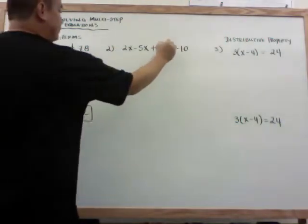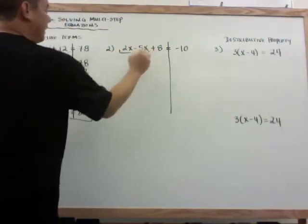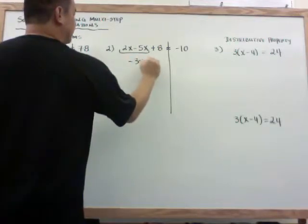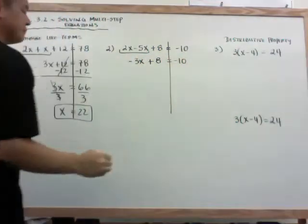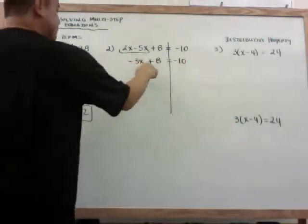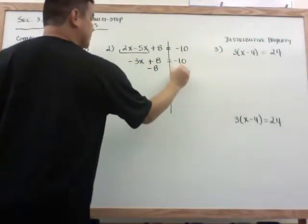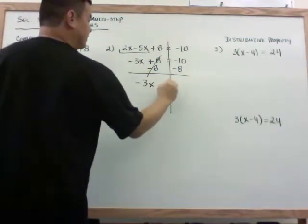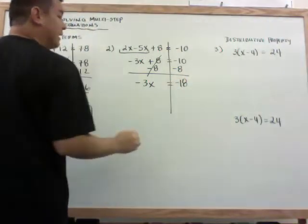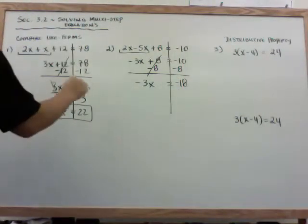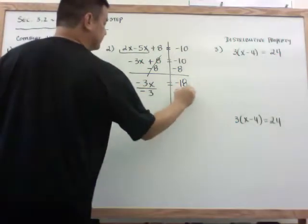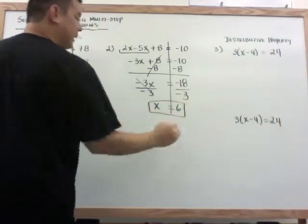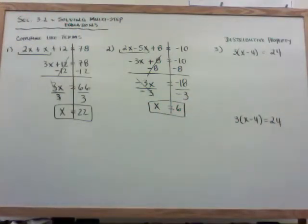Same thing here. I've got another example. Just draw the line down the equal sign. When I combine these two like terms, 2x minus 5x, I get negative 3x plus 8 is equal to negative 10. I need to get rid of that plus 8. So I'm going to minus 8 from both sides. And then I'm left with negative 3x is equal to negative 18. And because I have negative 3 times x, I'm going to divide by negative 3. This just becomes 1x is equal to negative 18 divided by negative 3 becomes a positive 6.